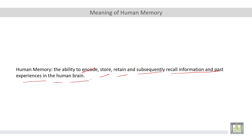The types of memory include two types. The first is short-term memory, defined as the type of memory responsible for the temporary storage of information — we store information for a short period of time. The second is long-term memory, which is responsible for the storage of information for an extended period of time.